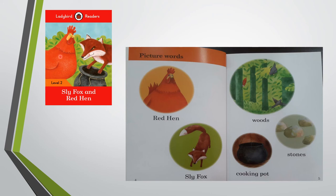And behind the red hen there are words — see, these are the words. Come to page number 4 — picture words: red hen, sly fox. Children, these are the two main characters of the story, as you already have seen in the title page.